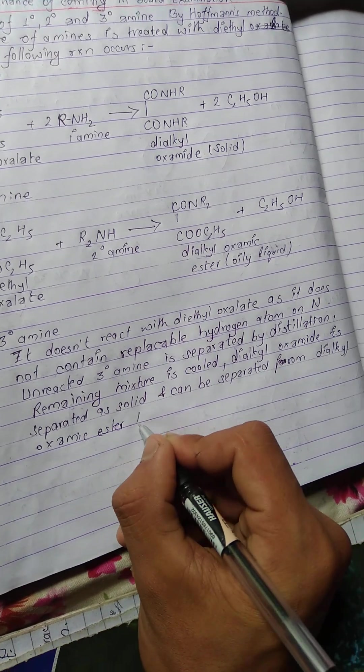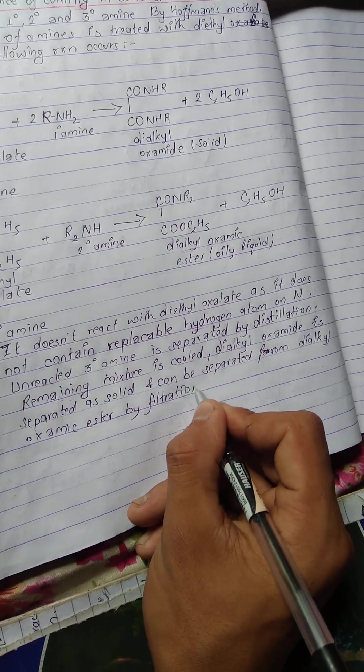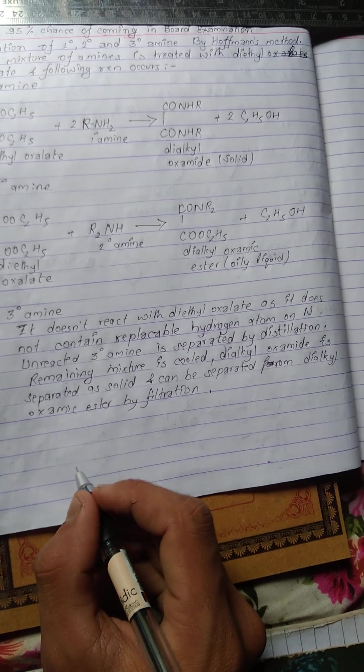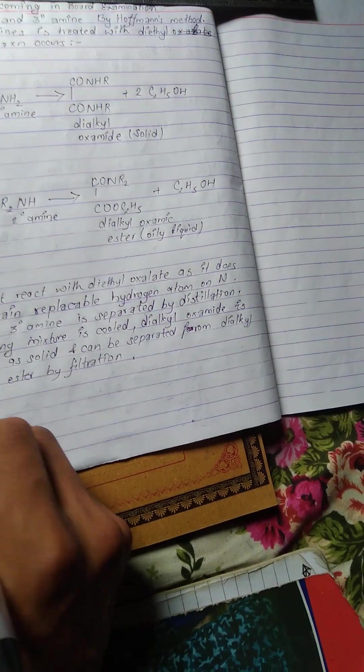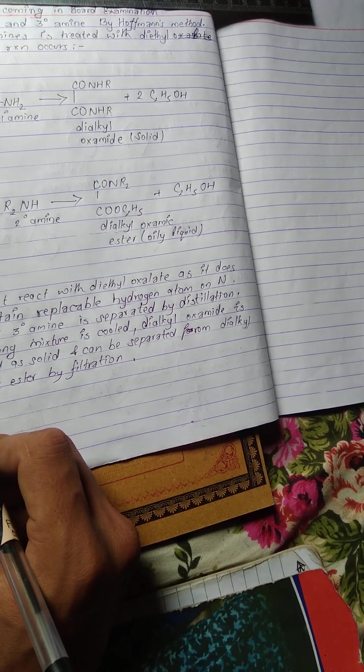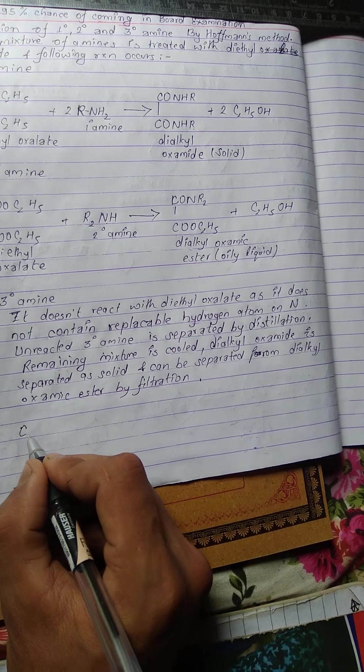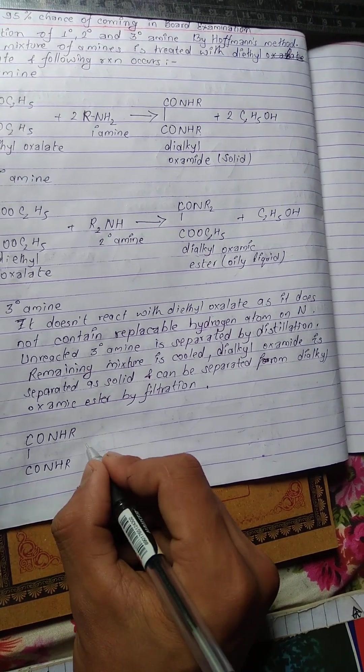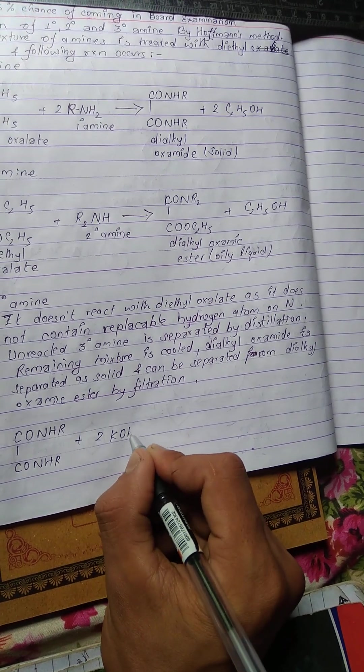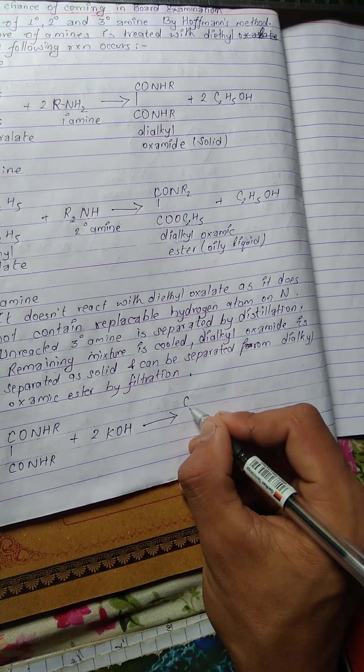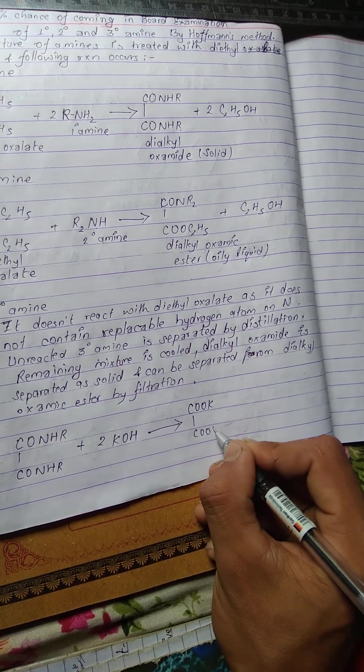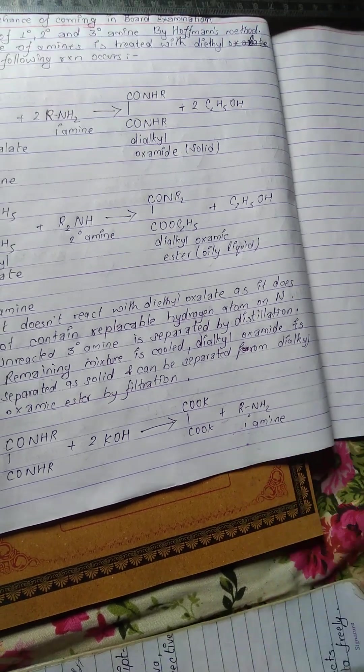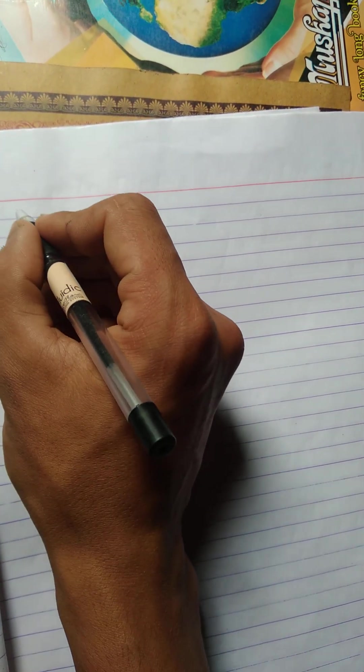To get the one degree amine back, the dialkyl oxalate solid is hydrolyzed. The reaction is: R-NH-CO-CO-NH-R plus water gives R-NH2 (one degree amine) plus oxalic acid. It's a hydrolysis reaction. The respective amine is formed: one degree amine.